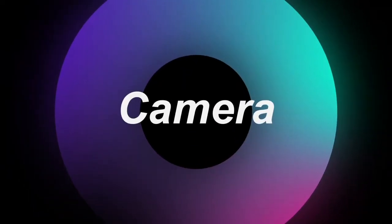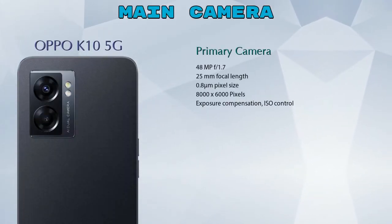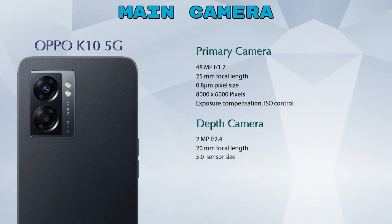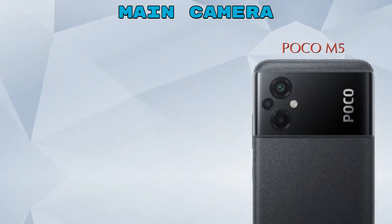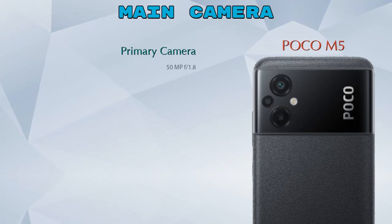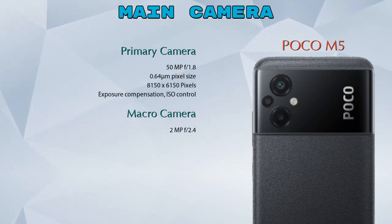Now let's talk about our favorite feature: the camera. For the rear camera, the K10 5G has two cameras — a primary camera and a depth camera. The POCO M5 has three cameras — a primary camera, a macro camera, and a depth camera.